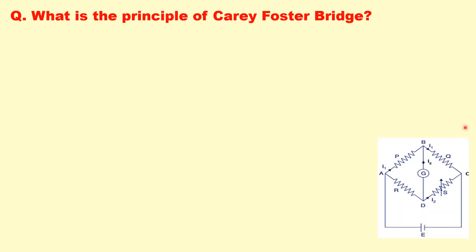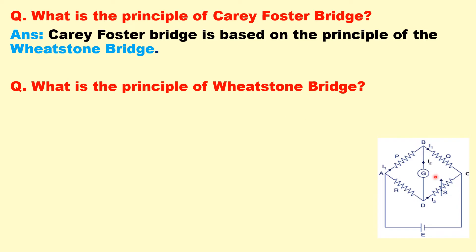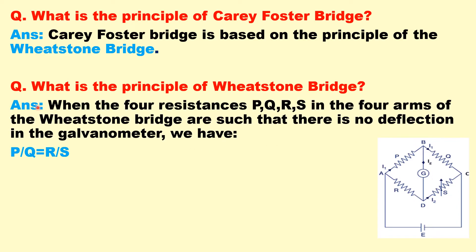What is the principle of Carey-Foster bridge? Carey-Foster bridge is based on the principle of Wheatstone bridge. When we have four resistances P, Q, R, and S in the four arms of the Wheatstone bridge, with a galvanometer in the bridge arm, in the case of no deflection in the galvanometer the bridge is in the balanced condition: P by Q should be equivalent to R by S.